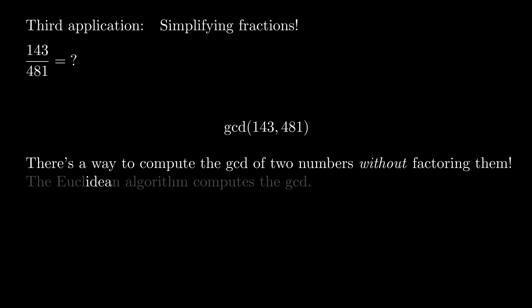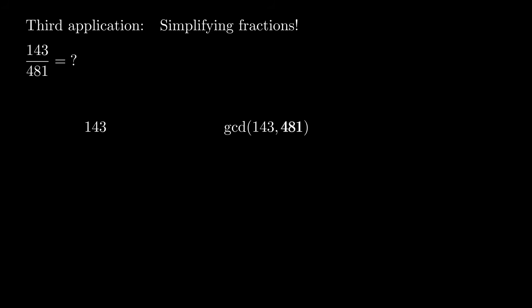Here's the idea hidden inside the Euclidean algorithm. If we subtract 143 from 481, the result is 338. Since these three numbers are related by this equation, a common divisor of any two of them is also a divisor of the third, because we can factor it out.